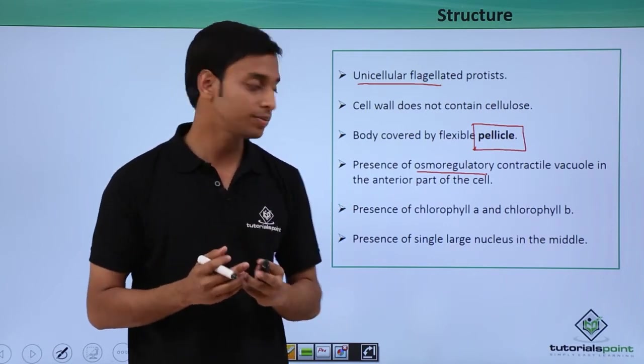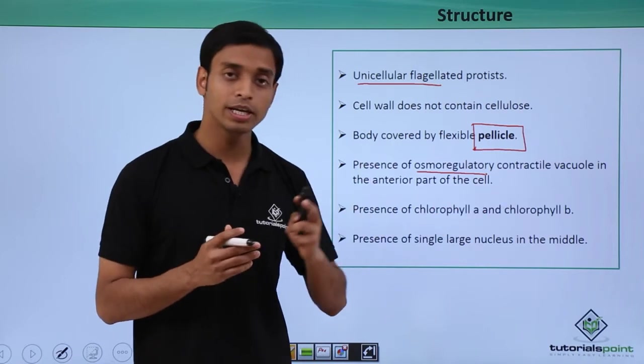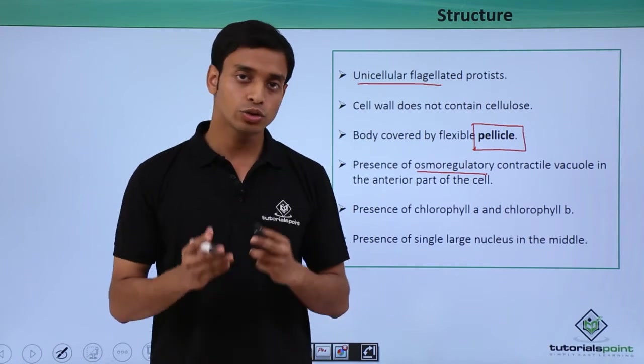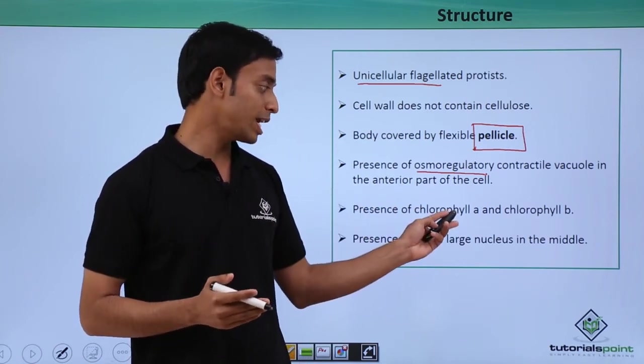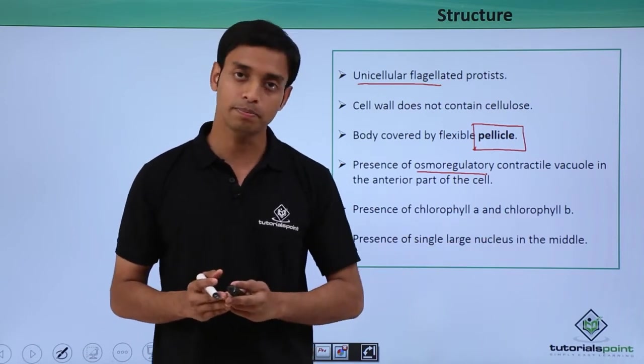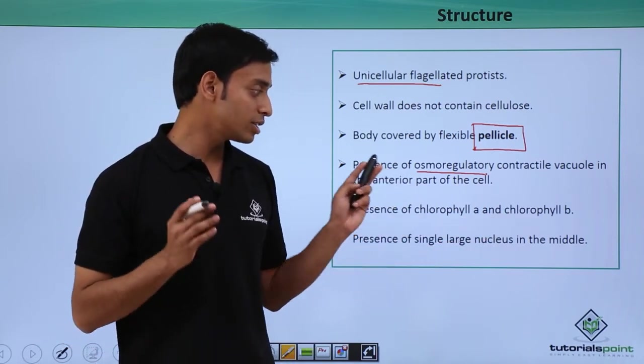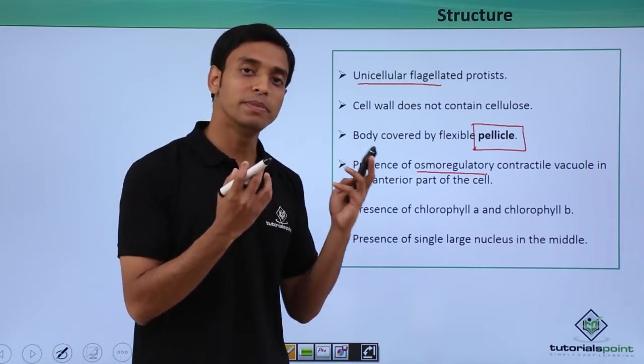There is presence of chlorophyll A and chlorophyll B. We have discussed that these are photosynthetic type of protists, so they have photosynthetic pigment chlorophyll and they are mostly of two types: chlorophyll A and chlorophyll B. They have presence of single large nucleus which is mostly present in the central area, in the middle.